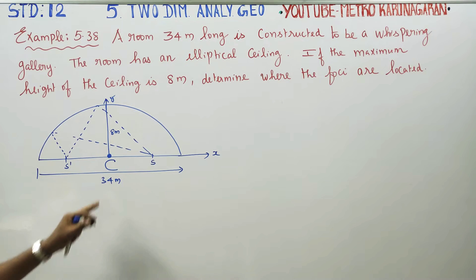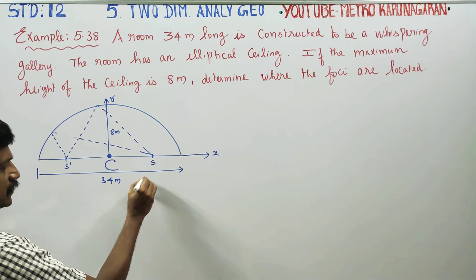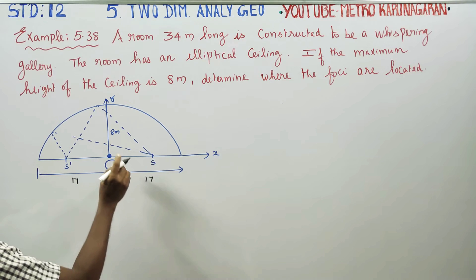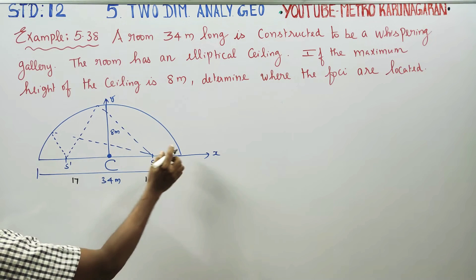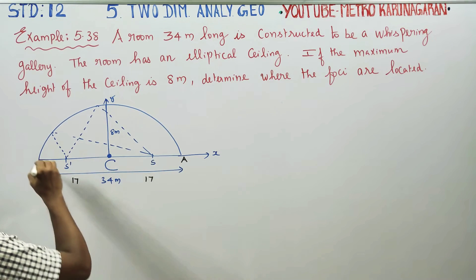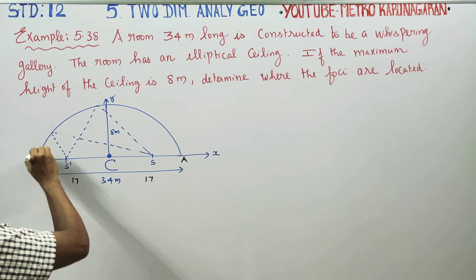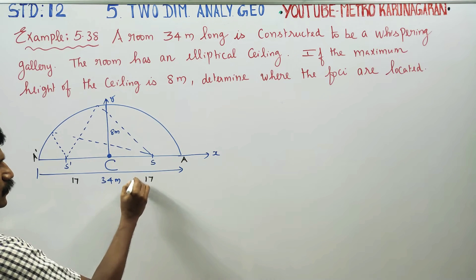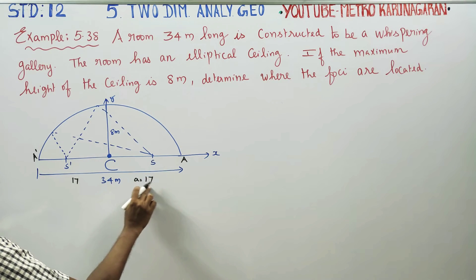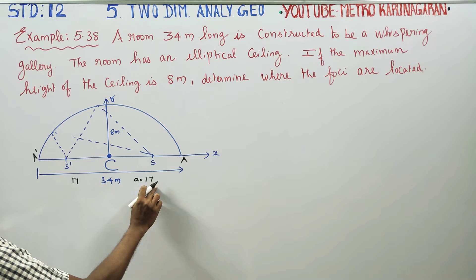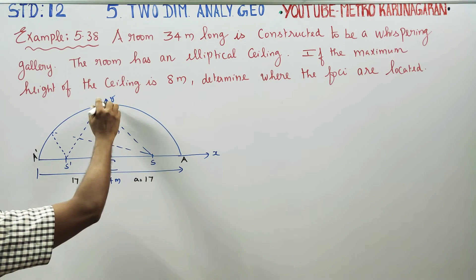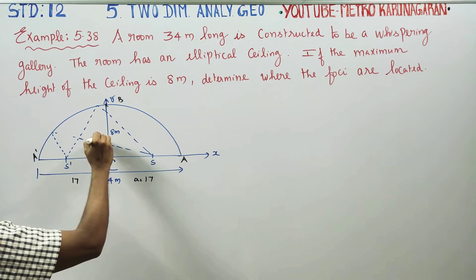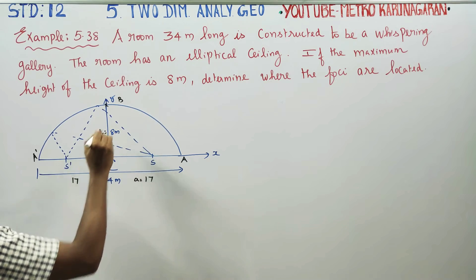The room is 34 meters long, so half of that is 17 meters. From the center to the vertex, AA dash, the semi-major axis is denoted by the letter 'a'. From the center along the y-axis, the semi-minor axis is denoted by the letter 'b'.